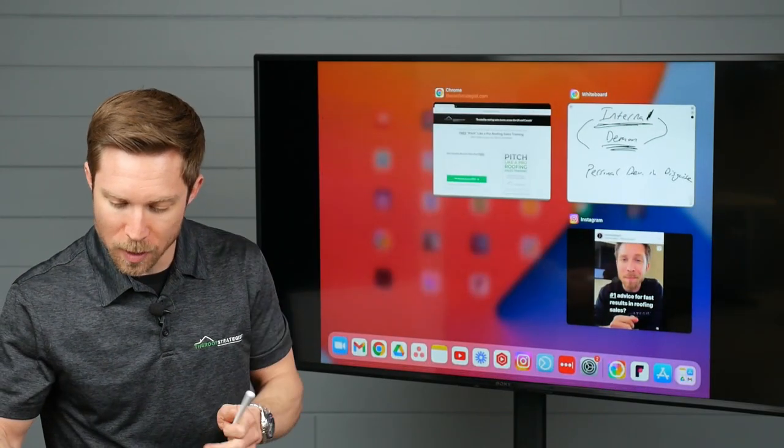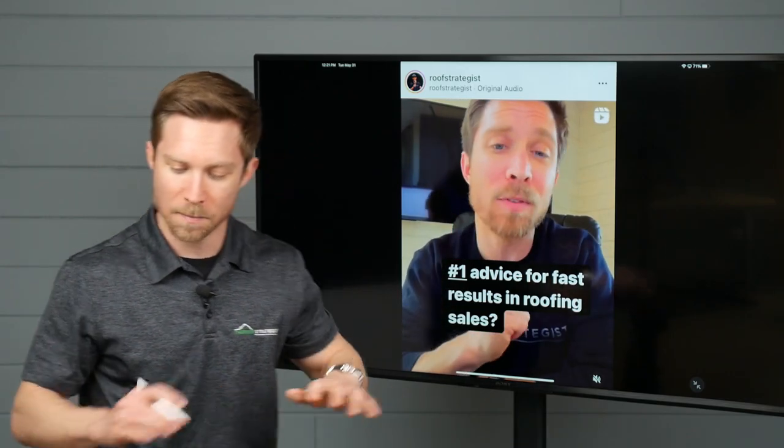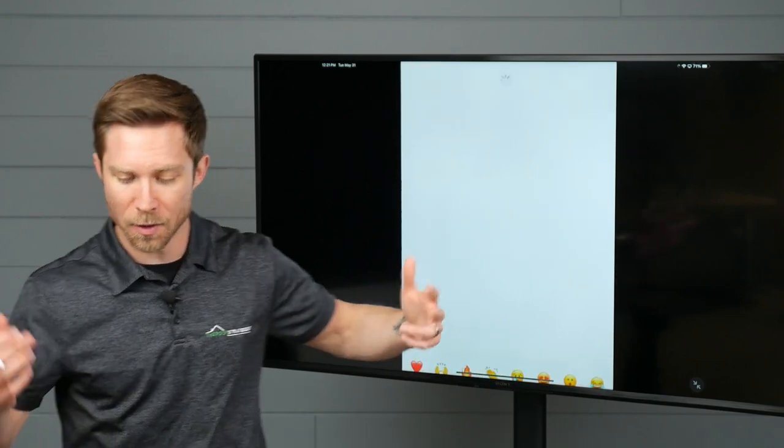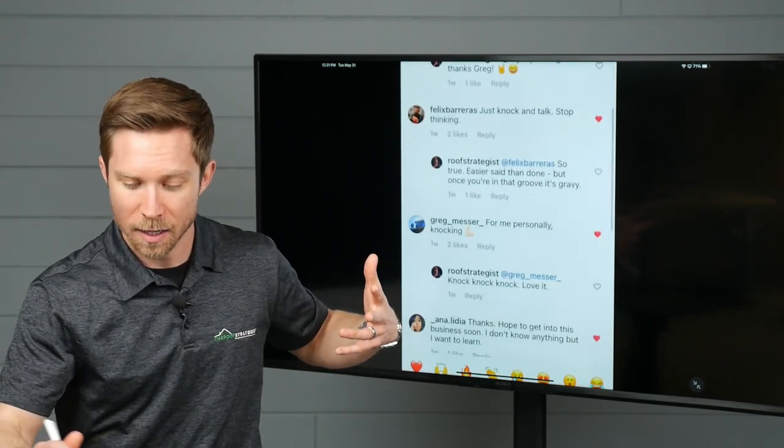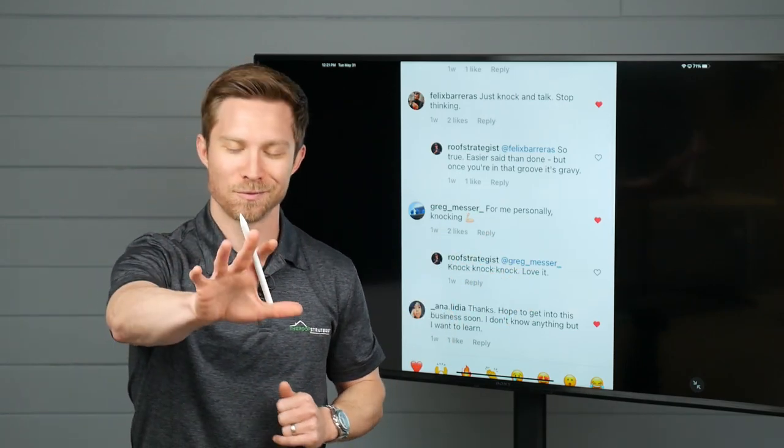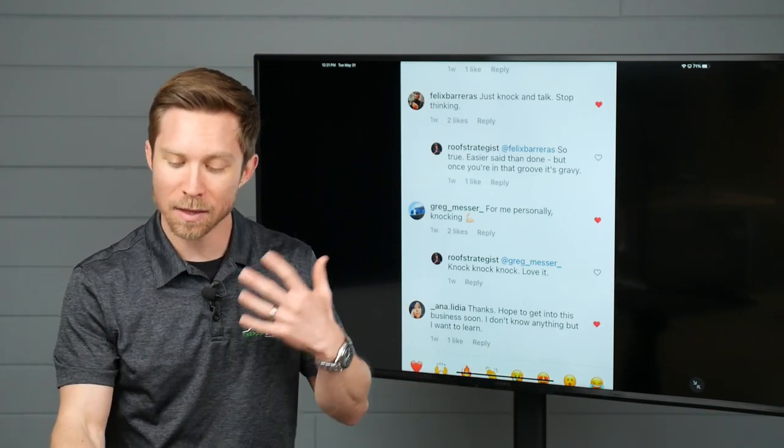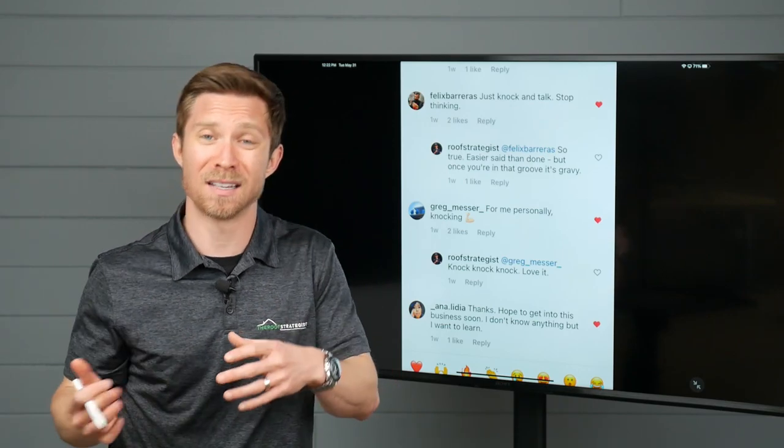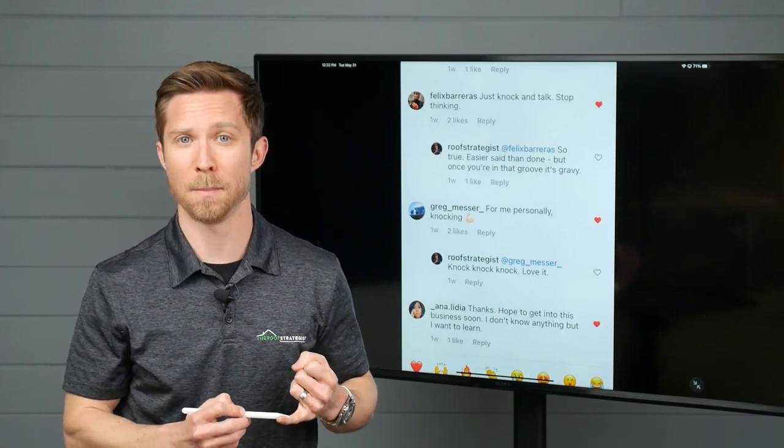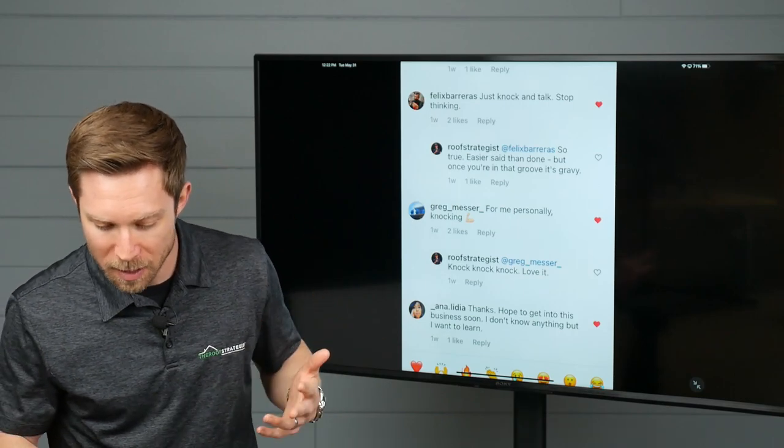Now let's turn our attention real quick to Instagram. If you're not following me on Instagram, it's at roof strategist. I did this post on what's your number one advice for roofing sales. I want to share a few of these because they're not my ideas, but they're ideas that other folks had. Flex Barrera said, just knock and talk. Stop thinking, which by the way, inspired a training in the pitch pro movement about getting into the flow state when pitching. Stopping thinking is the biggest piece for you to get into flow, is to get out of your head. Then we have Greg. He said for me personally, just knocking, getting out and doing it over and over.